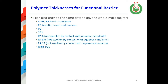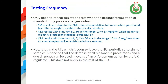Testing frequency: you only need to repeat migration tests when the product formulation or manufacturing process changes, unless you have specific migration results that are close to the SML minus the analytical tolerance, in which case you should test often enough to establish statistical certainty. For overall migration results with simulant D2 in the range 10–13 mg/dm², or with aqueous simulants A, B, C, and D1 in the range 10–12 mg/dm², an annual repeat will establish statistical certainty. After a few annual repeats, you should see that 10 plus the permitted analytical tolerance is not exceeded.